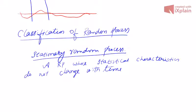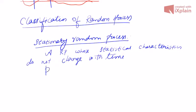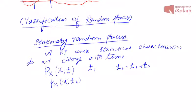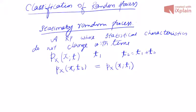What does stationary mean? We have a random process with probability density function p(x, t). By stationarity, we mean that if we shift the time — suppose we take time t1 and then t2 = t1 + t0 — then the PDF p_x(x, t2) is the same as p_x(x, t1). In other words, the probability density function of a stationary random process does not depend on time.